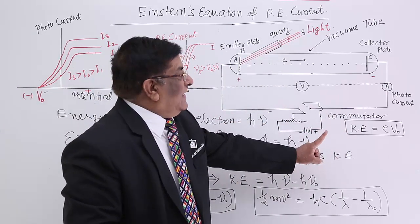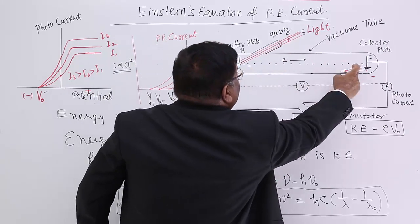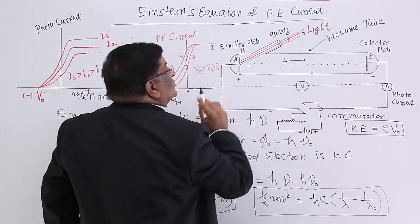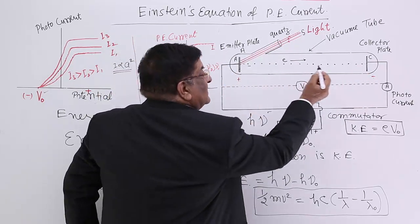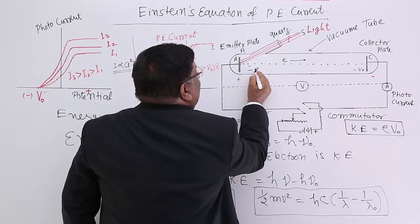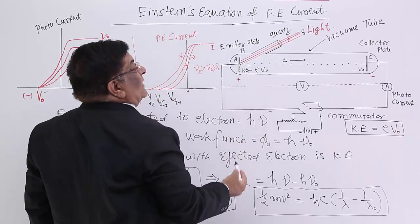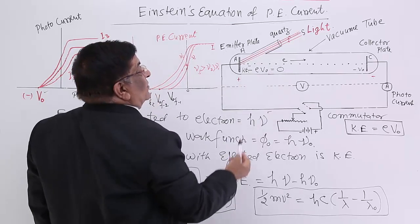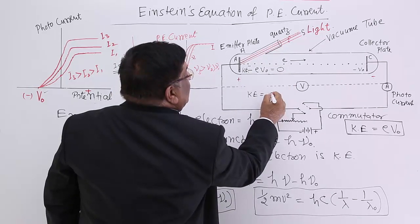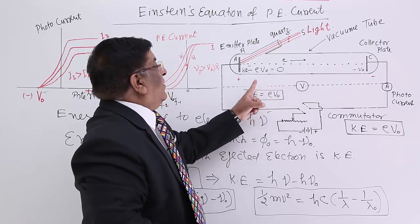Let me make it clear once again. When the electron comes out without any voltage it has kinetic energy, and with that it makes the current. If I apply a stopping potential negative, then it stops. Because under the effect of minus V0, it has potential energy equal to minus E V0 and it has kinetic energy. But now it has stopped moving, meaning the total energy has become zero. So kinetic energy is equal to E V0. This V0 is a measurement of kinetic energy.